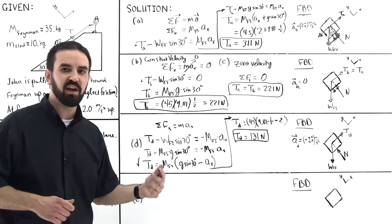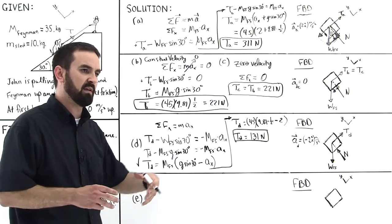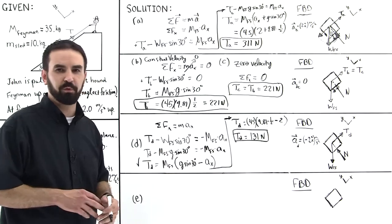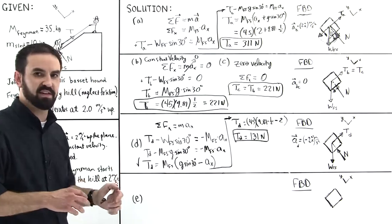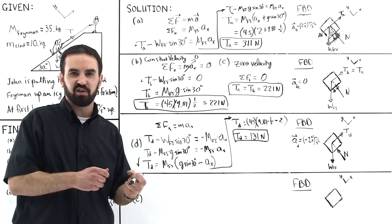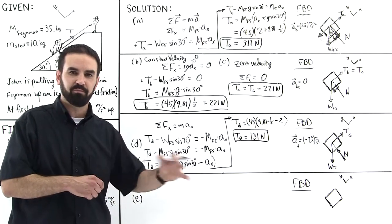This number is the thing that changes that, you know, on a test it could be, you know, 1.5, 1.75. It could be 3.2, whatever. And you'd be asked to find the tension, the tension that John is exerting to keep Feynman from sliding down. And so we can use this.